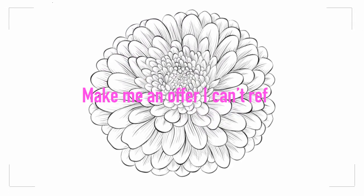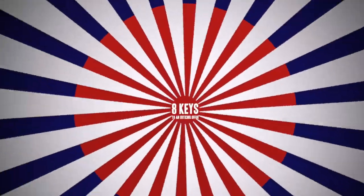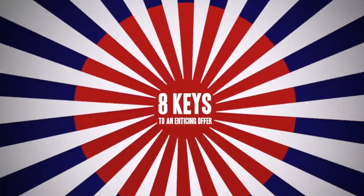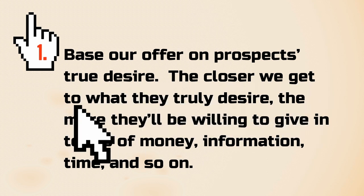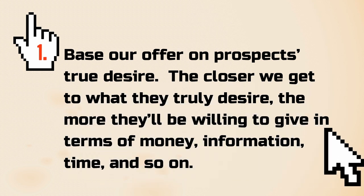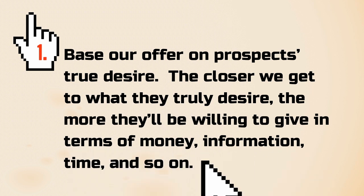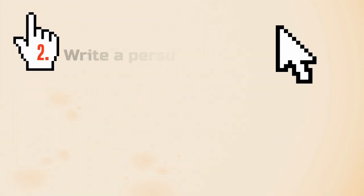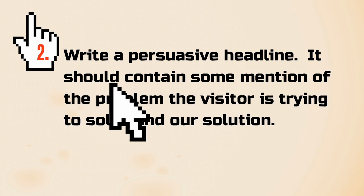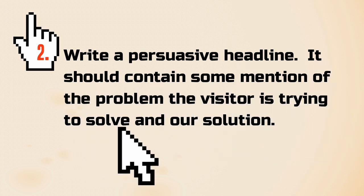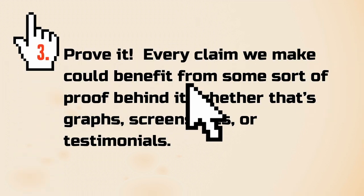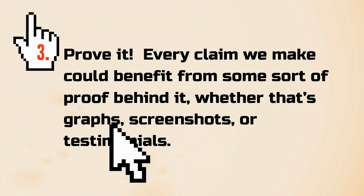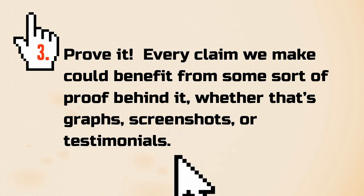Make me an offer I can't refuse. To finish, let's look at Rabin's eight keys to writing an enticing offer. 1. Base our offer on prospects' true desire — the closer we get to what they truly desire, the more they'll be willing to give in terms of money, information, and time. 2. Write a persuasive headline — it should contain some mention of the problem the visitor is trying to solve. 3. Prove it — every claim we make could benefit from some sort of proof, whether that's graphs, screenshots, or testimonials.